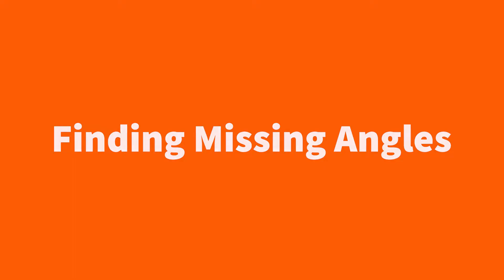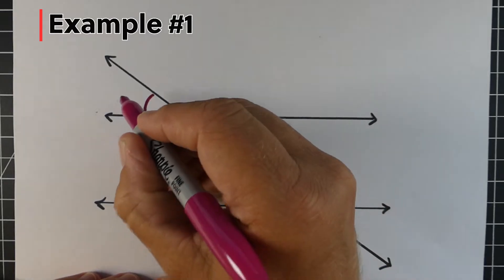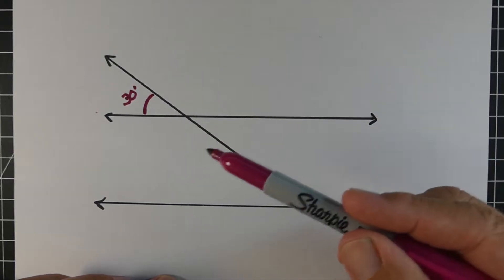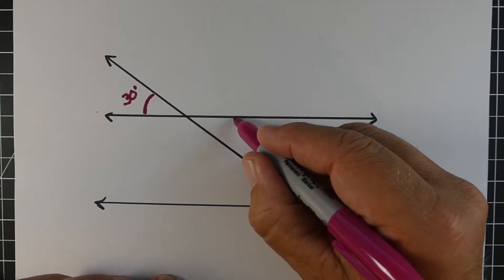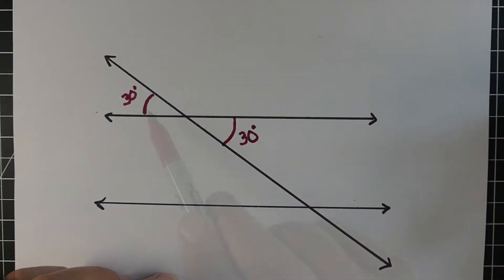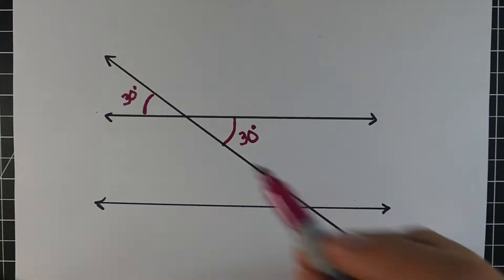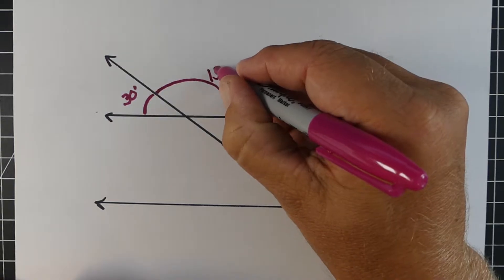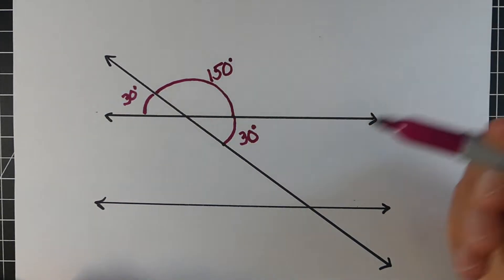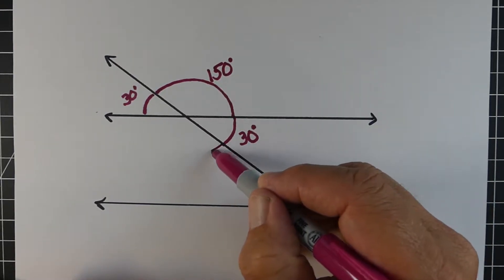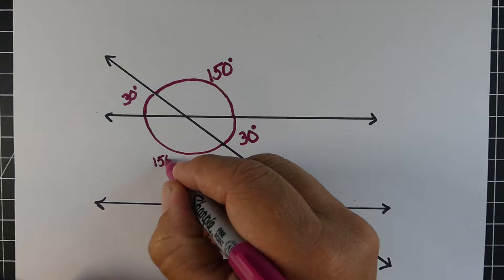Next we're going to find missing angles. We're going to be given one angle and use the rules to help us find the other seven. So let's say this is 30 degrees. We know the angle directly across from it is a vertical angle and it's the same — so we already have one angle right here, it's 30 degrees. These two angles right here equal 180, so we subtract the 30 and figure out that this is 150. The missing angle up top is vertical from 150, or adjacent with the other two — either way, it's going to equal 150 degrees.